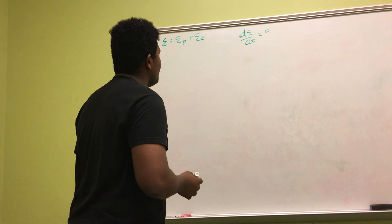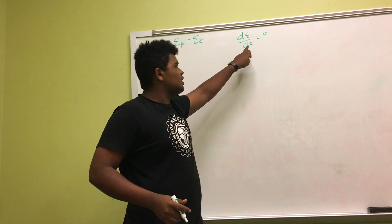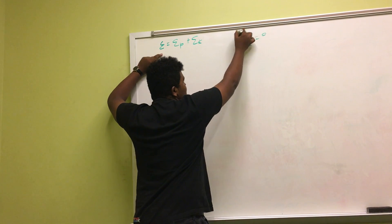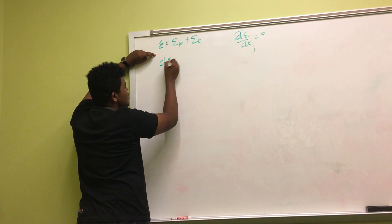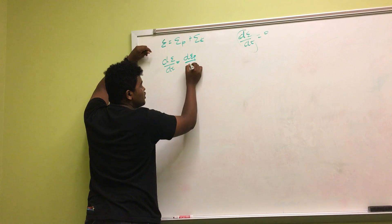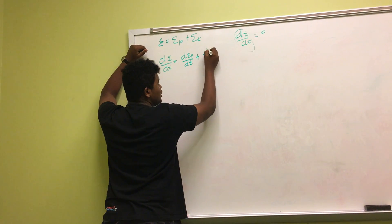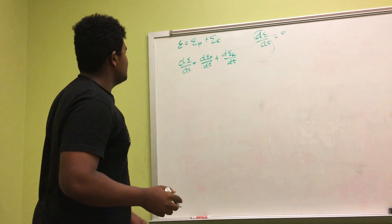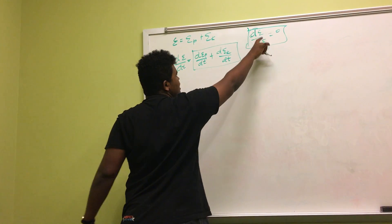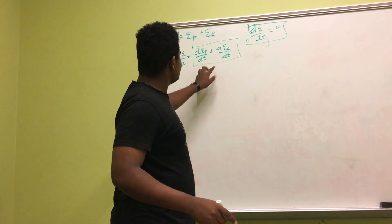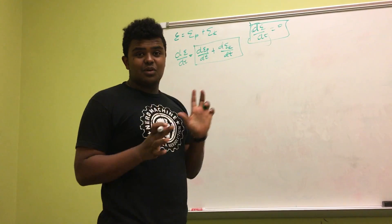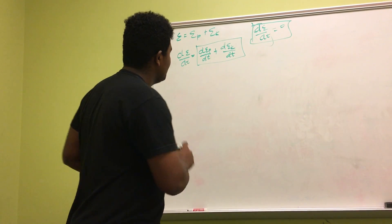Got it. So let's do derivation one here — deriving the energy with respect to time. Let's take dE over dt equals the rate of change of energy potential with respect to time plus the rate of change of energy kinetic with respect to time. These two statements are the same because they are both dE over dt. I'm just proving here. The derivative — zero.